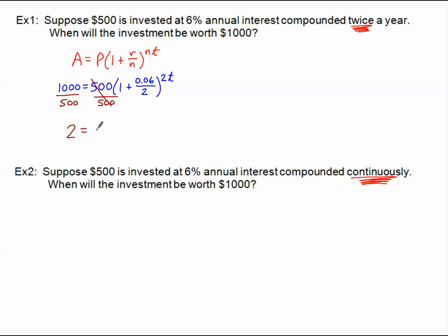The one that's farthest away is usually the one that goes first, so I'm going to divide this 500 out of here. 1,000 divided by 500 is 2. And over here, 0.06 divided by 2 is 0.03, and 0.03 plus 1 is 1.03, raised to the 2t power. The base is isolated like it needs to be.